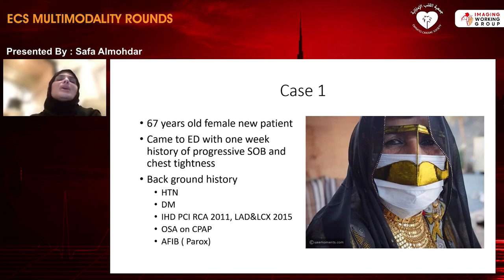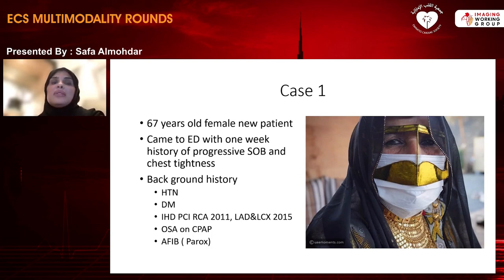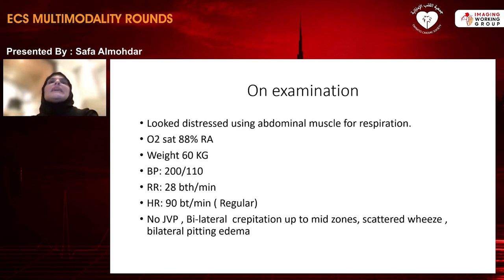The first case is a 67-year-old woman who came to the emergency department with one-week history of progressive shortness of breath and chest tightness. She has a background history of hypertension, diabetes mellitus, ischemic heart disease with PCI to the RCA in 2011 and LAD and left circumflex in 2015. She has obstructive sleep apnea on CPAP and paroxysmal atrial fibrillation. She denied close contact with COVID-19, fever, cough, sore throat, or GI symptoms.